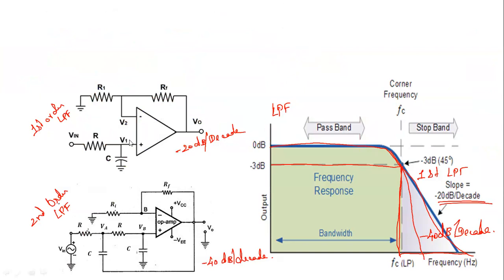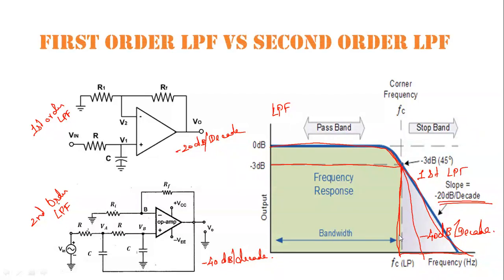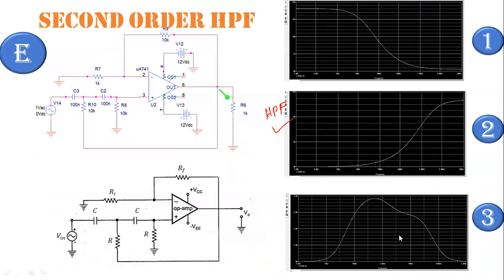Looking at the frequency response, the first order low pass filter has a roll-off rate of minus 20dB per decade. If we use a second order filter — two cascaded RC filters — the roll-off rate becomes minus 40dB per decade. The blue line represents the first order low pass filter at minus 20dB per decade, and the red line graph at minus 40dB per decade shows a sharper response — it reaches zero very quickly, meaning the slope is much steeper.